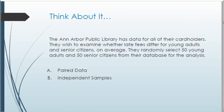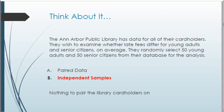Let's look at a couple examples to figure out if we're working with paired or independent samples — feel free to pause the video to think before we go over solutions. First question: the Ann Arbor Public Library has data for all their cardholders and wishes to examine whether late fees differ for young adults and senior citizens on average. They randomly select 50 young adults and 50 senior citizens. This would be an example of independent samples — there's nothing pairing one young adult to one senior citizen. Instead, we're just finding the average difference between the two groups.